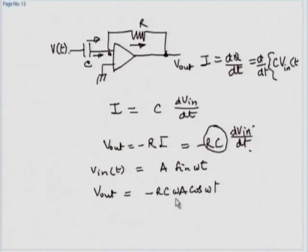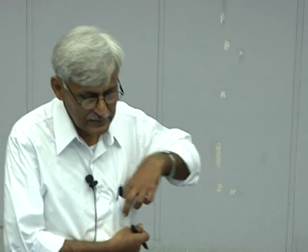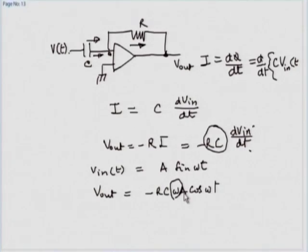If the frequency goes to zero — DC — the output will be zero. So low frequencies are blocked; DC is blocked completely. Otherwise you have an output amplitude that increases linearly with ω. Such circuits are called linear filters, because the underlying amplifier is linear. I have simply replaced R1 with a capacitor.